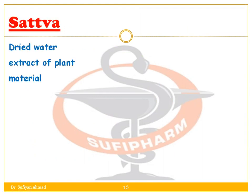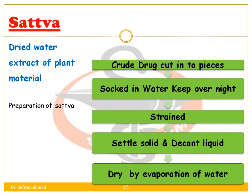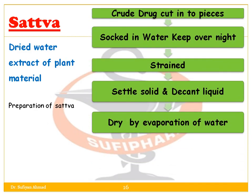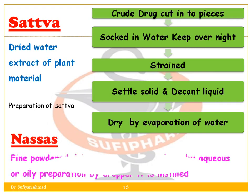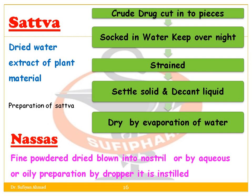Satava is the dried water extract of plant material. In its preparation, the crude drug is cut into pieces, soaked in water, kept overnight, then strained. The settled solid is separated, the liquid is decanted, and water is removed by evaporation to obtain the dry extract.